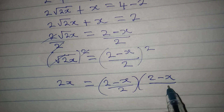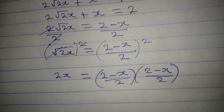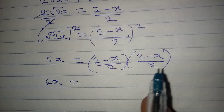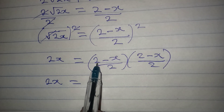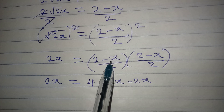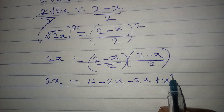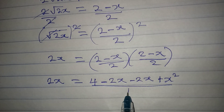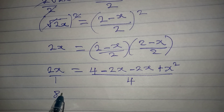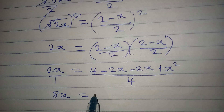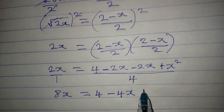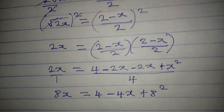Watch carefully: 2x equals (2 minus x) over 2 times (2 minus x) over 2. Expanding: 2 times 2 gives 4, then 2 times minus x gives minus 2x, minus x times 2 gives minus 2x, and minus x times minus x gives plus x². The whole thing is over 4. Cross-multiplying: 4 times 2x gives 8x, equal to 4 minus 4x plus x².